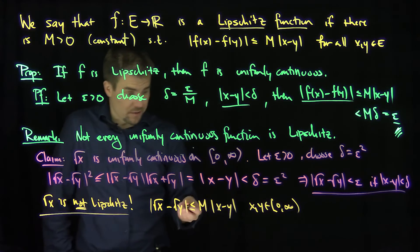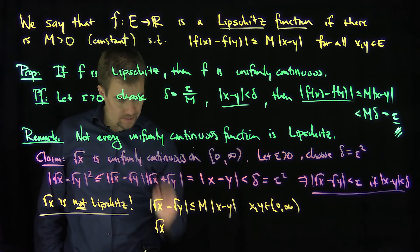Well, if it were Lipschitz, I would have |√x - √y| ≤ M|x - y| for all x and y in [0, infinity). We can just choose y to be equal to zero. Then that would say that √x would just be less than or equal to Mx.